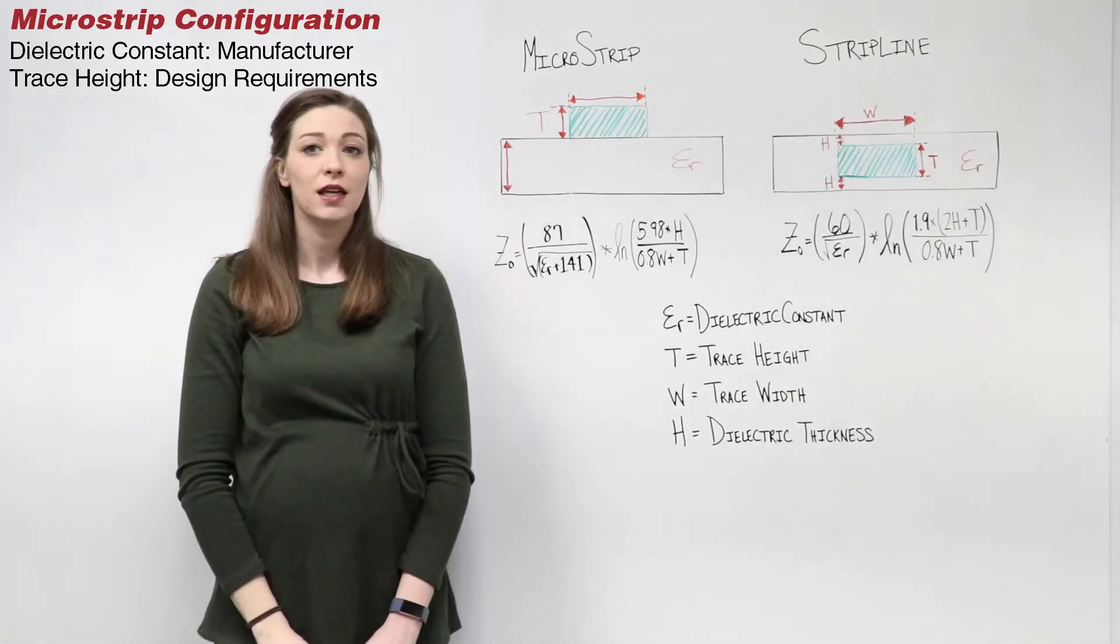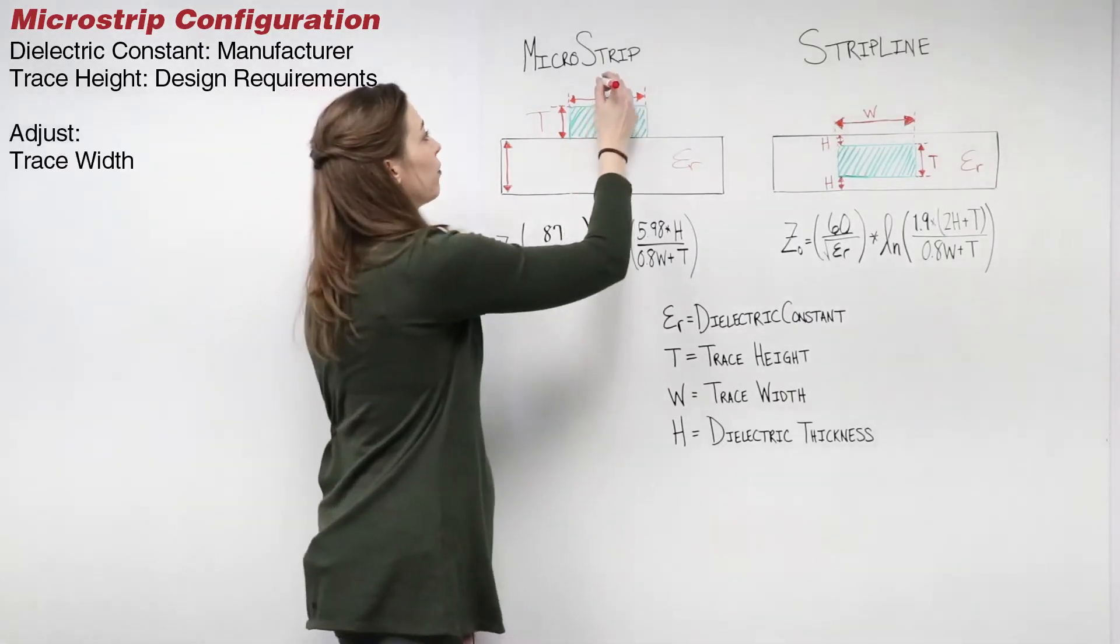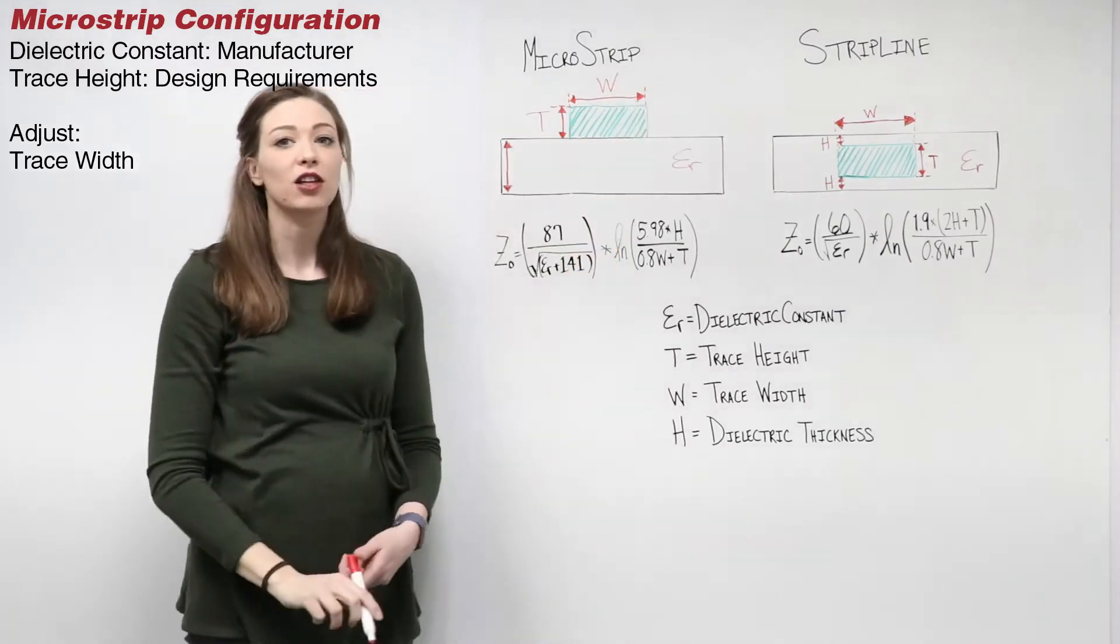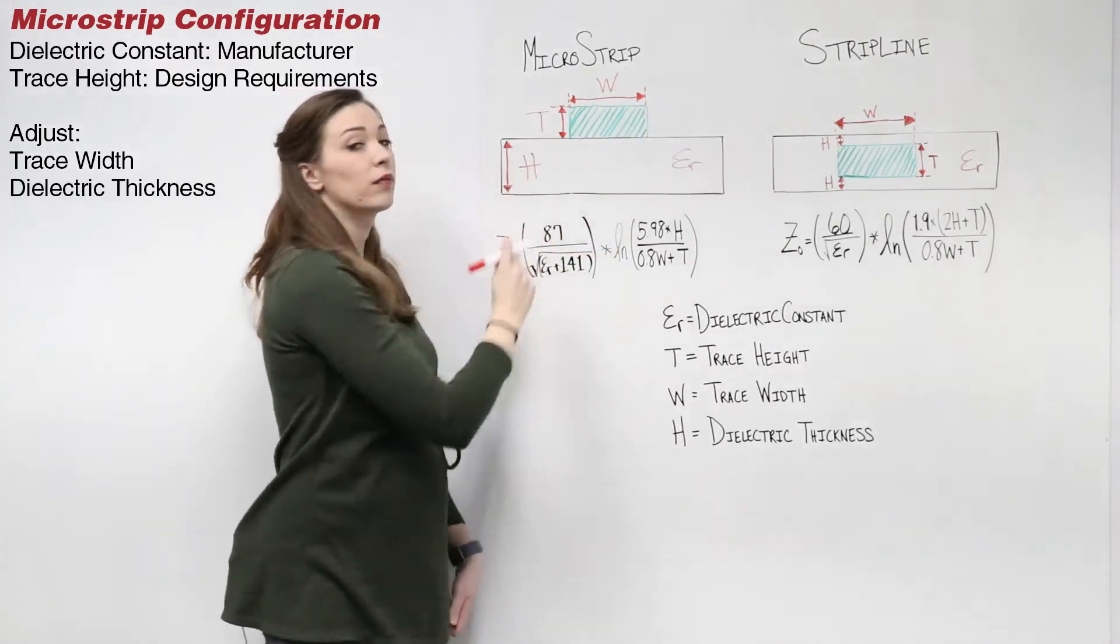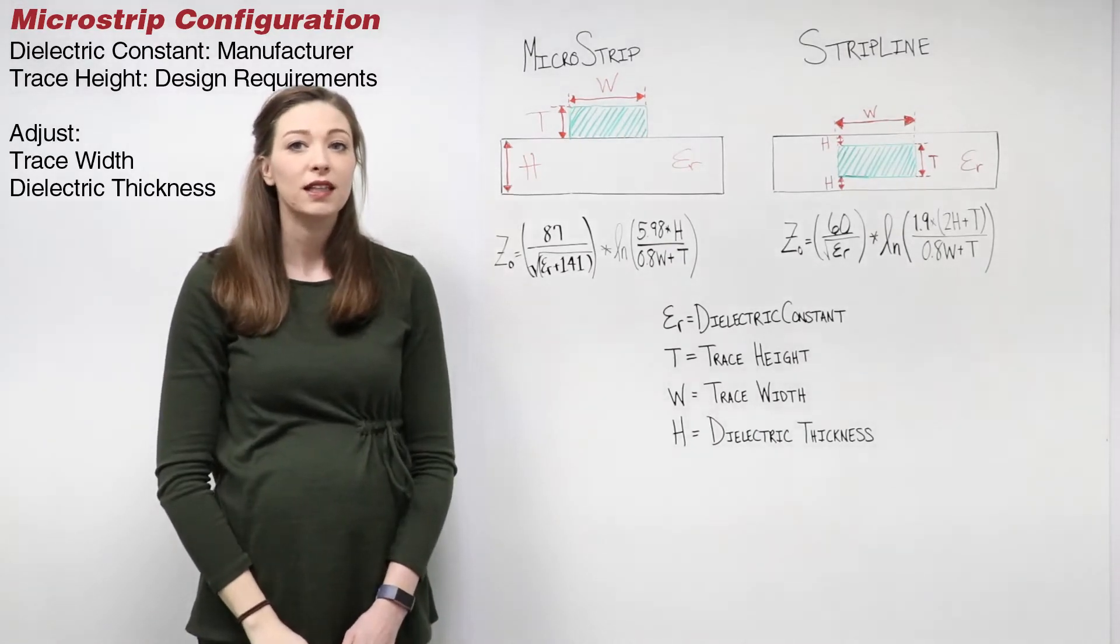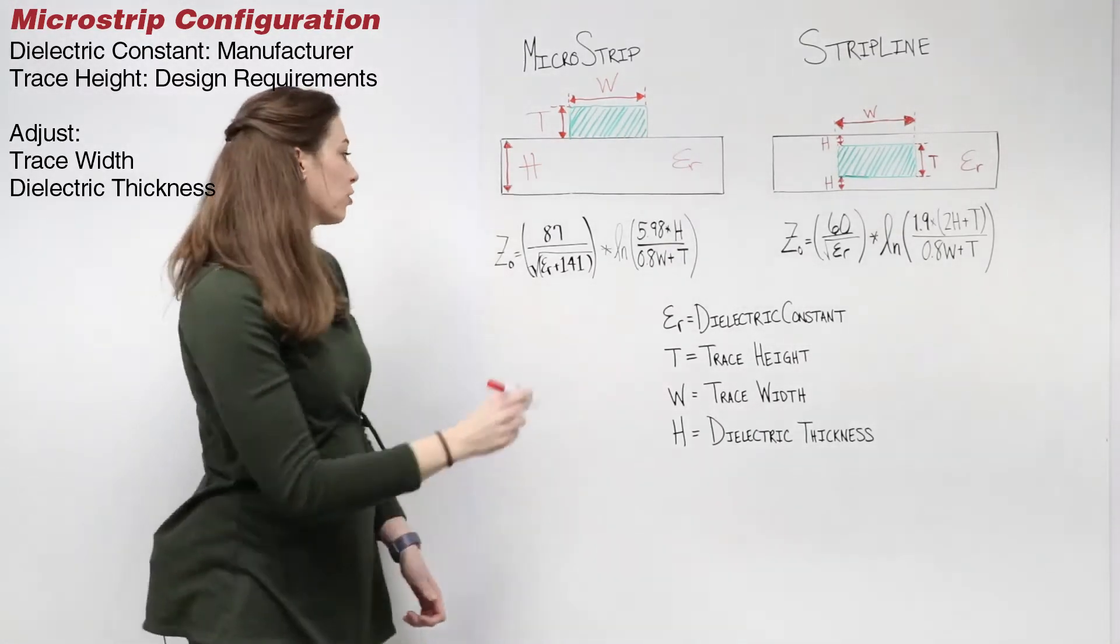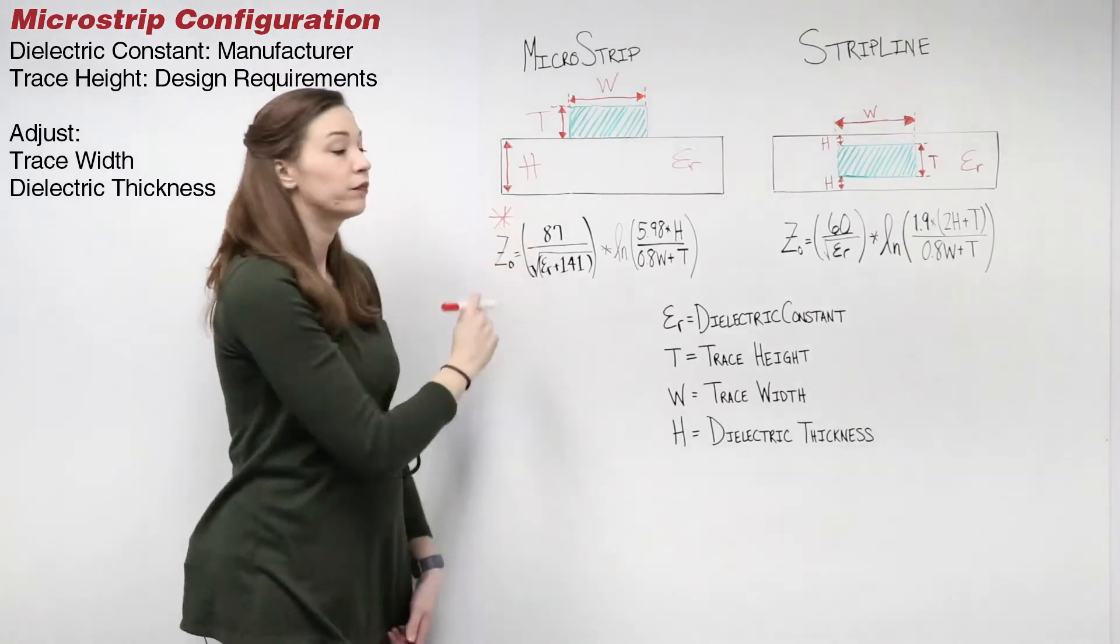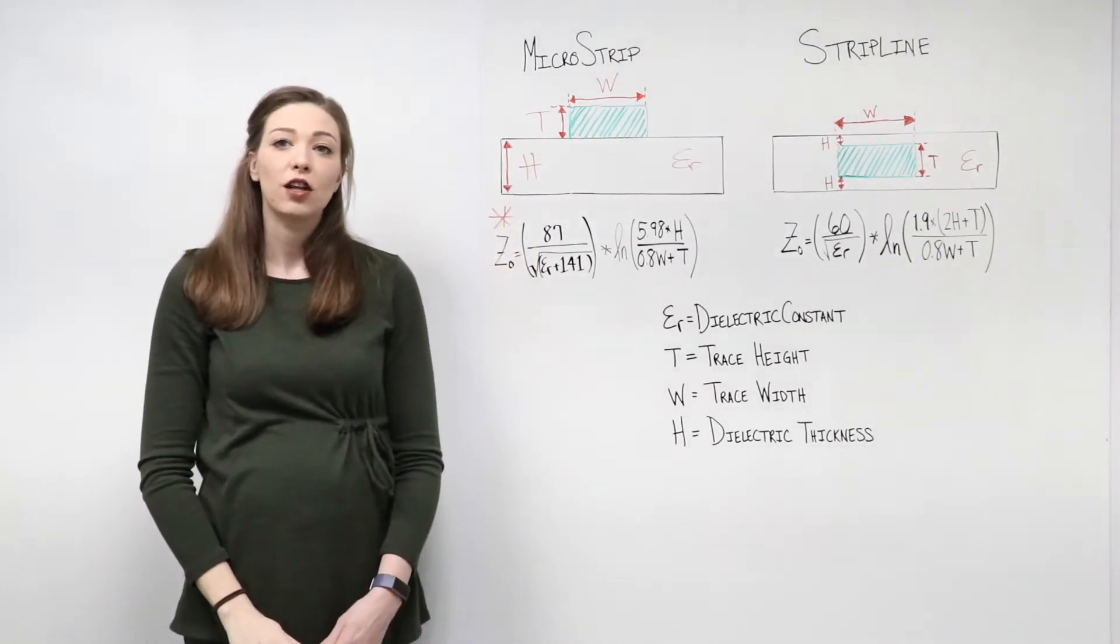To control the impedance, adjust the trace width and dielectric thickness until the correct value is obtained. To complete the calculation, you can use the following formula for a microstrip configuration. Now let's take a look at a stripline configuration.